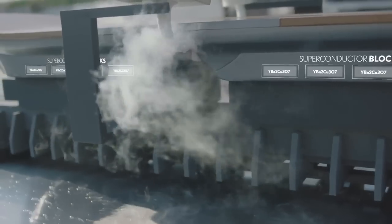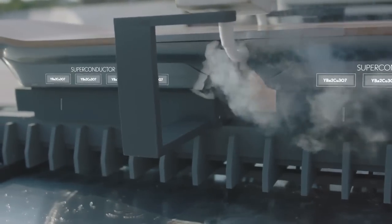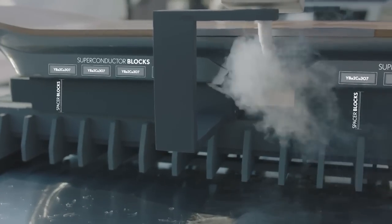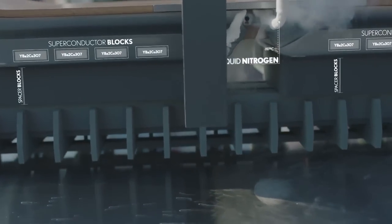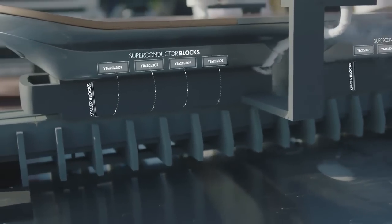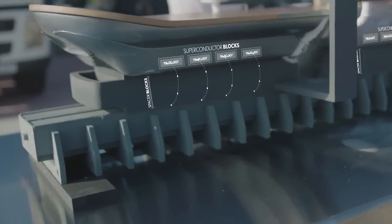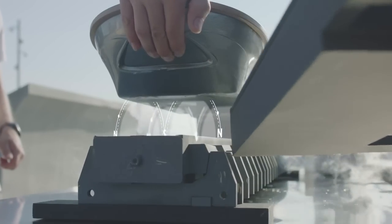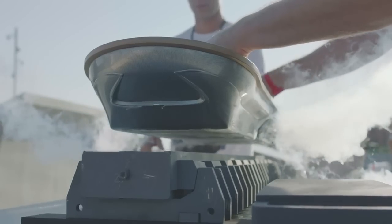And if you bring the superconducting material at a distance above this track and cool it down with liquid nitrogen, it gets its superconducting properties. Then this stores this magnetic field and is able to levitate above this track segment as long as it is cold.